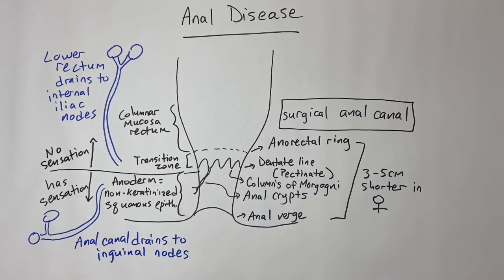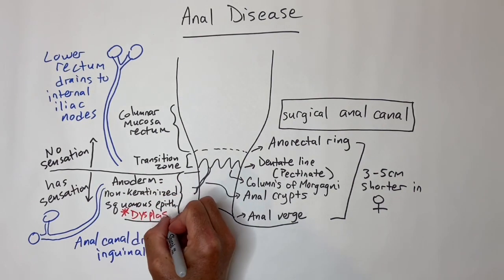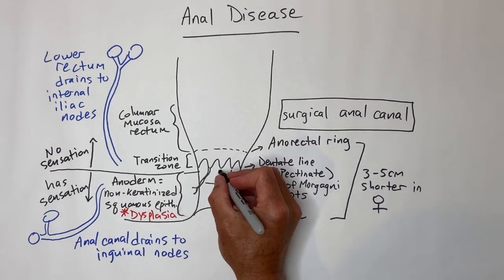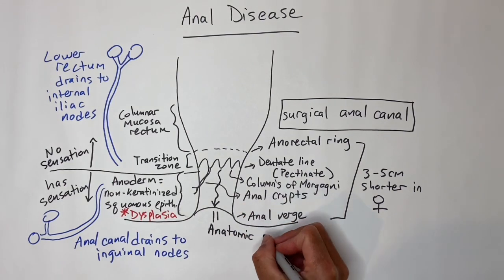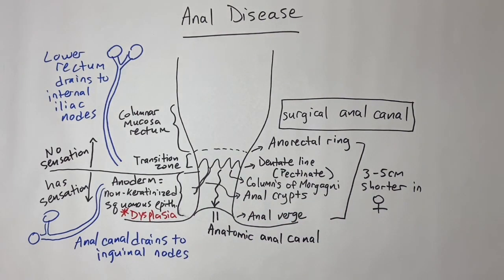The anoderm is where dysplasia most commonly arises. The term anatomic anal canal usually just refers to the canal below the dentate line, as opposed to the surgical anal canal, which goes to the top of the sphincter muscles.